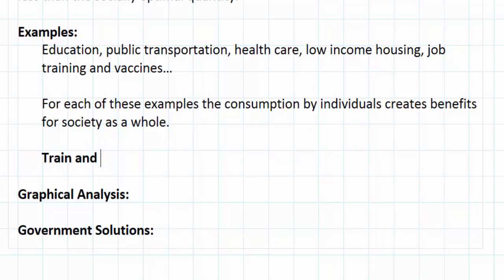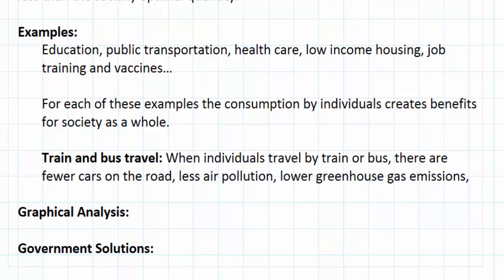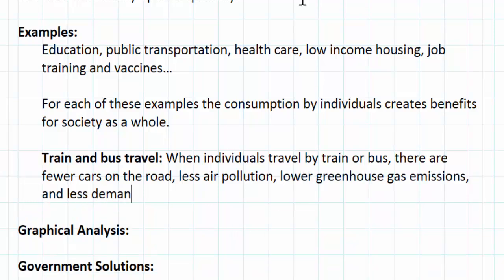Let's look at the market for train and bus travel, assuming it is provided by the free market. When individuals travel by train or bus there are fewer cars on the road, less air pollution, lower greenhouse gas emissions, and less demand for automobile fuel. All of these things benefit society as a whole.